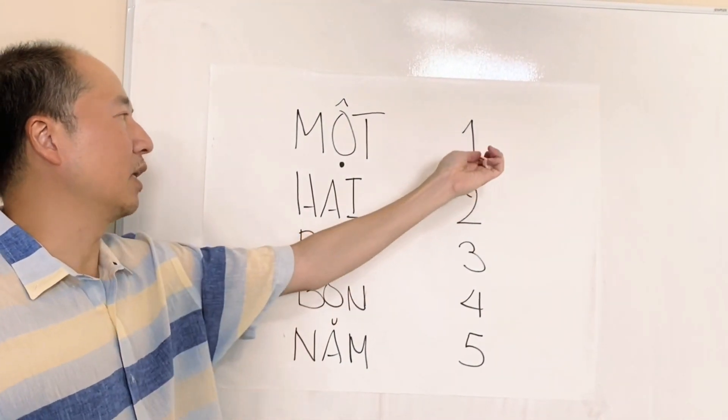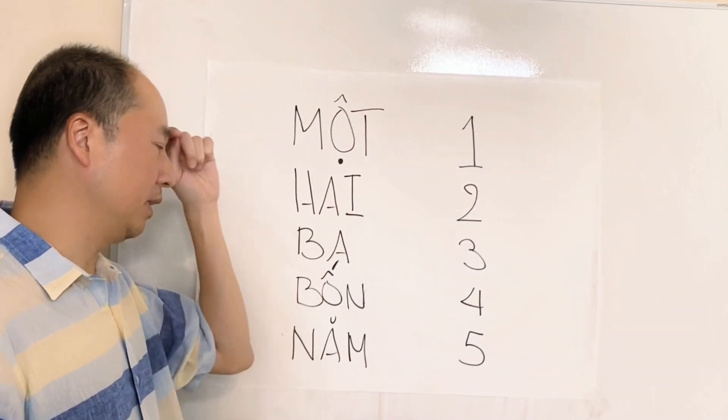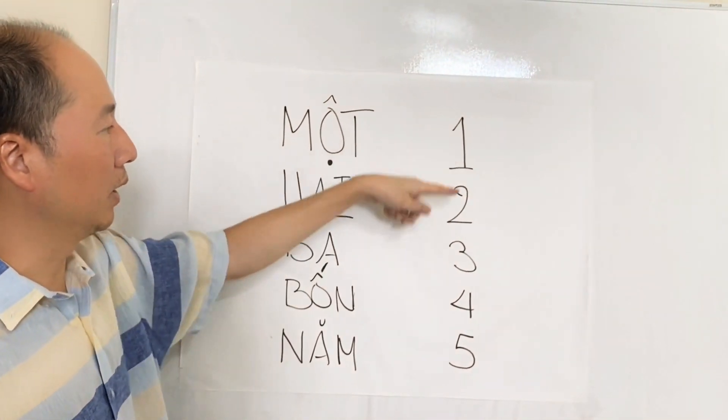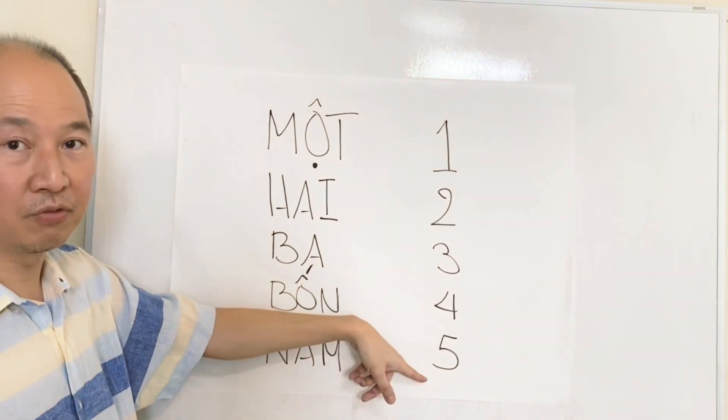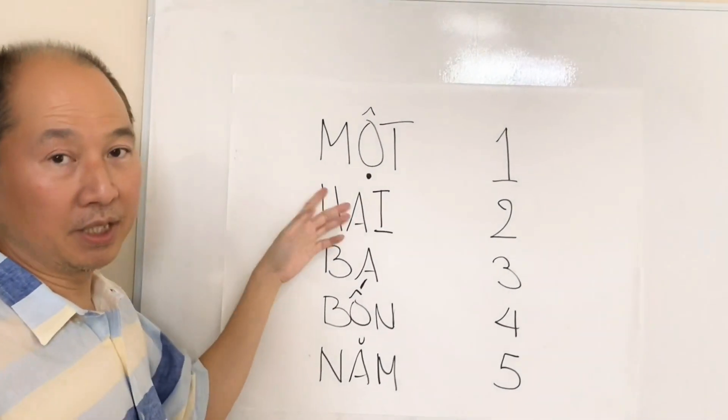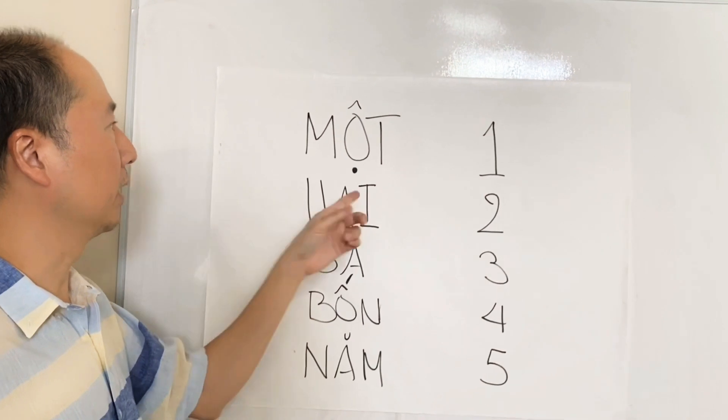So again, these are the numeric representation of the numbers we're gonna be counting, one, two, three, four, and five. Vietnamese is the representation. So I'll do one at a time.